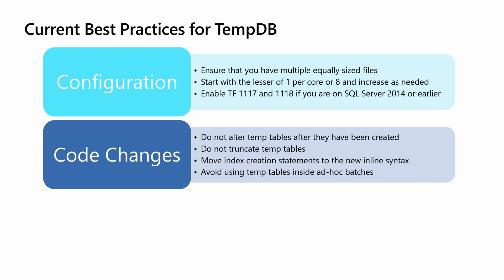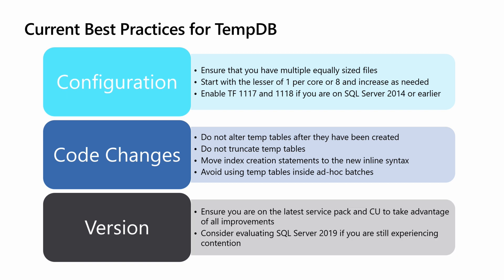Also avoid using ad hoc batches with temp tables. If you're going to use temp tables, using stored procedures is better because then we can nearly guarantee cache reuse. And then consider the version of SQL Server you're running. In 2016 or later, we automatically configure TempDB for you, so you don't have to worry about manually creating multiple files and manually turning on those trace flags. Also in various service packs and cumulative updates in 2016 and 2017, we've released improvements that help minimize metadata contention and object allocation contention, so make sure you're running the latest cumulative update. If after all of that you're still seeing contention, then look at SQL Server 2019 because we are adding a lot to help with TempDB performance.